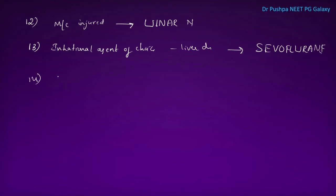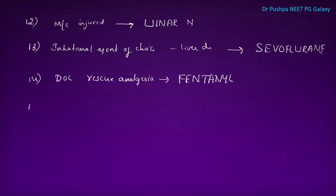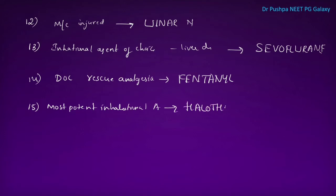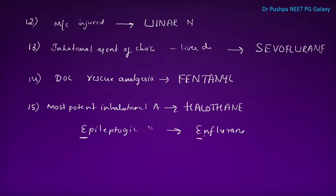The drug of choice for rescue analgesia is fentanyl. The most potent inhalational anesthesia is halothane. The most epileptogenic inhalational agent is enflurane — you can remember this: epileptogenic E, enflurane E.